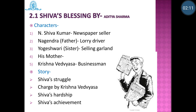Let us look at the major characters. The whole story revolves around Shiva Kumar, who is a newspaper seller. Second is Nagendra, his father, who is a lorry driver. Third is Yogeshwari, his sister, who is selling garlands at a common place along with Shiva's mother. The character of his father, sister, and mother is painted very rarely. The fifth character is Krishna Vedavya Vyasa, who is a businessman. The whole story revolves around Shiva Kumar and Krishna Vedavya Vyasa.